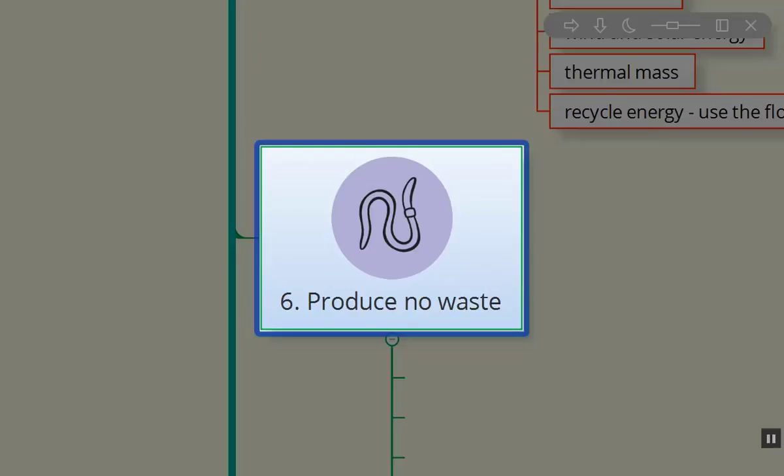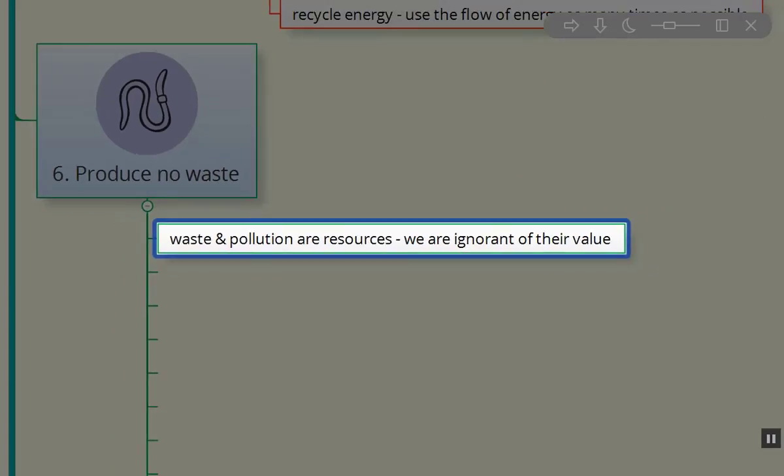The sixth permaculture principle, produce no waste. Waste and pollution are resources. We're just ignorant of their value and how we can use them. So we really have to study and look at systems to know that all waste, even our human waste, is something like John Todd has developed the living machine model that many people are using. My bioremediation system I've got on site doesn't do nearly as well as that, but certainly we can design systems, especially in larger systems that really don't produce any waste.